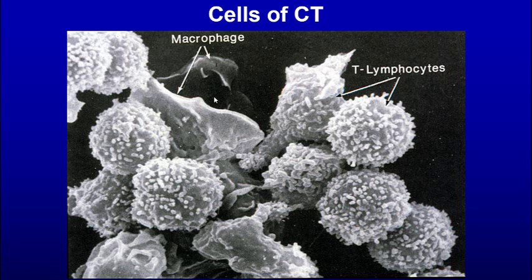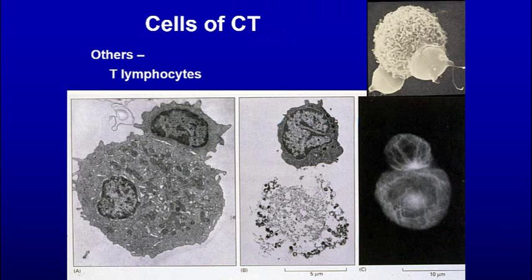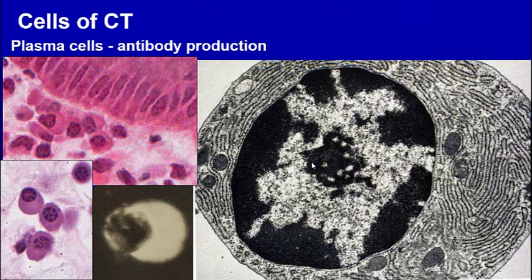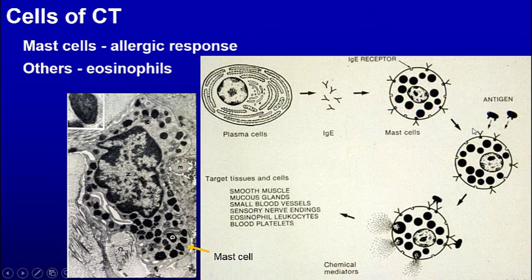Here you see T lymphocytes killing a tumor cell or virus-infected cell. Plasma cells: B lymphocytes give rise to plasma cells — here you can see a plasma cell, a classical one with a cartwheel nucleus and a big amount of cytoplasm. In that cytoplasm is rough endoplasmic reticulum but no secretory granules, because this cell is a constitutive secretor. It doesn't store antibodies in granules and then discharge — as soon as it produces them, it discharges.